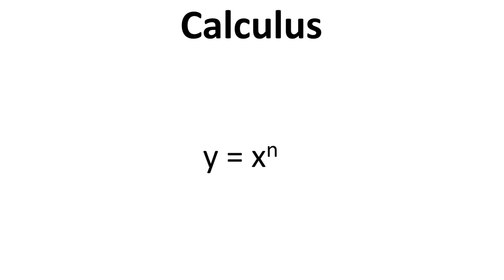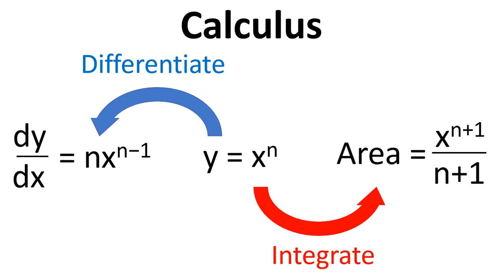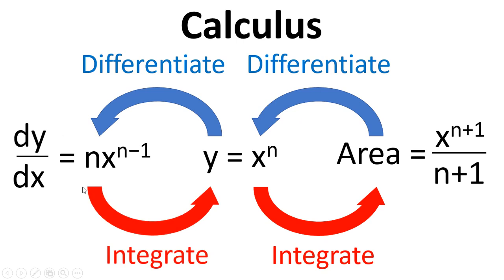So we've seen in this video and in the previous video that if we have y equals x to the n, that we can differentiate this and get n times x to the power of n minus 1. And we've seen in this video that if we integrate this, we get the area as x to the n plus 1 divided by n plus 1. But if we were to differentiate this function here, we end up back here. And if we were to integrate this function here, we'd end up back here. So what this shows is that integrating is the reverse of differentiating and vice versa.